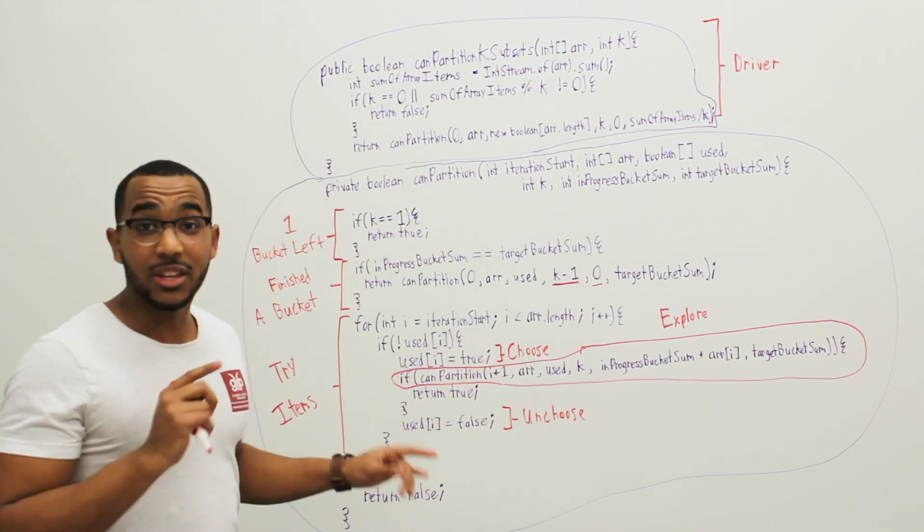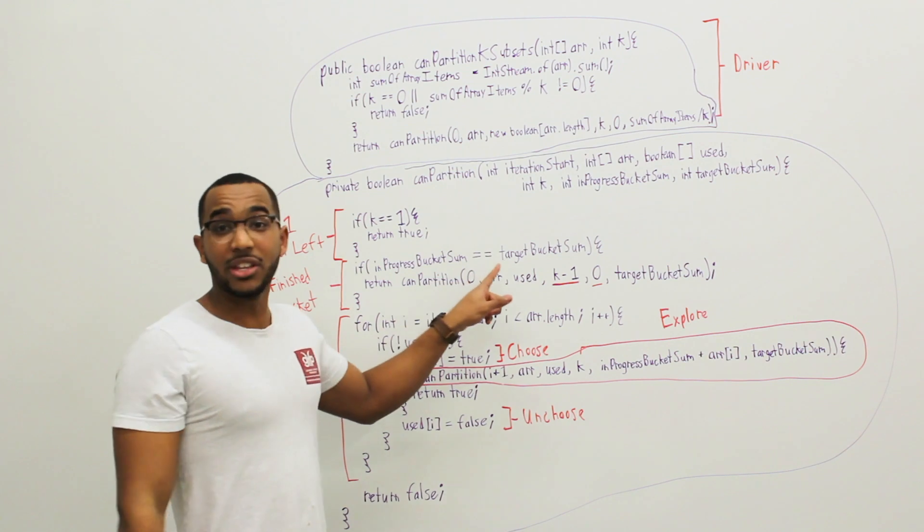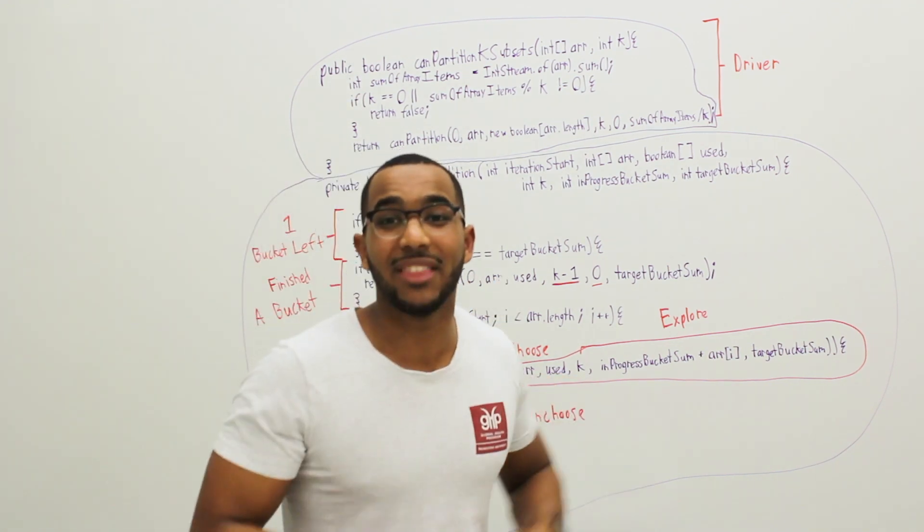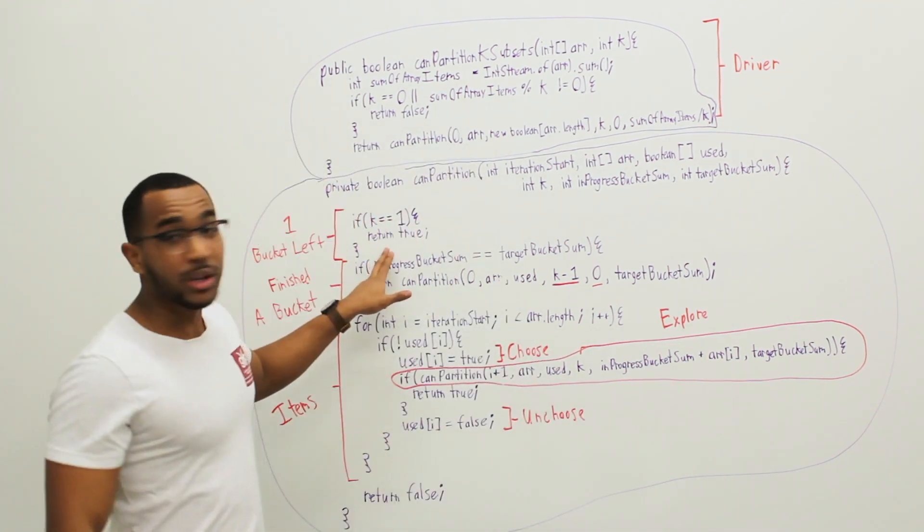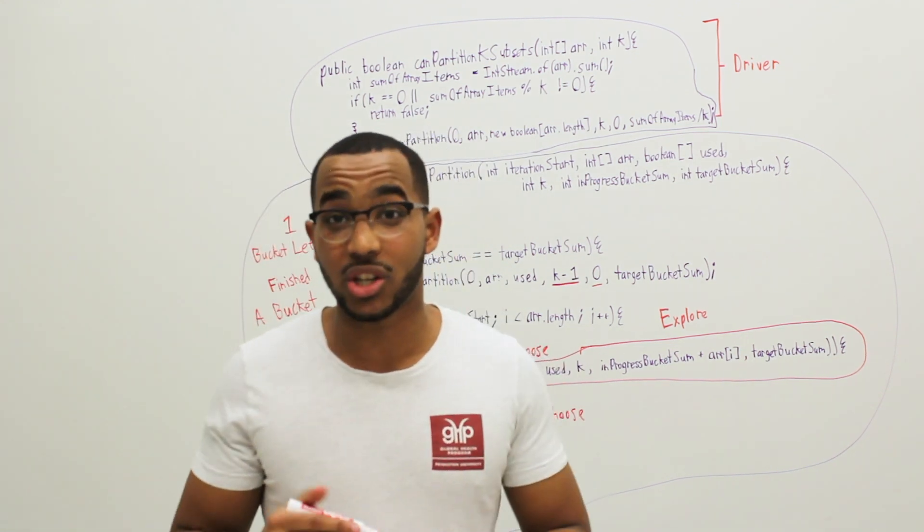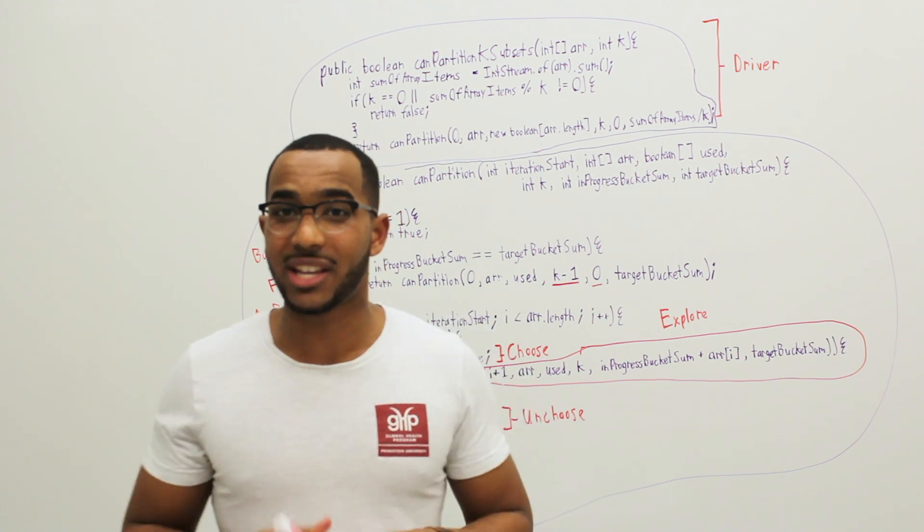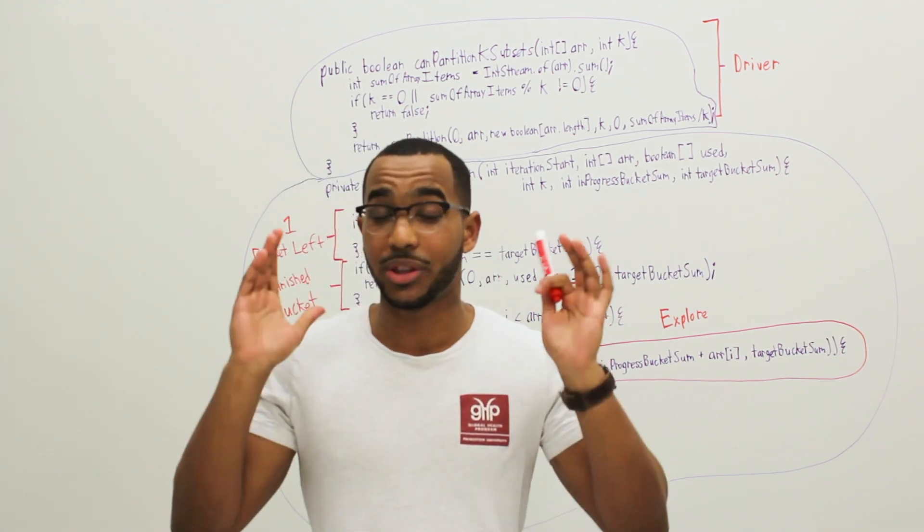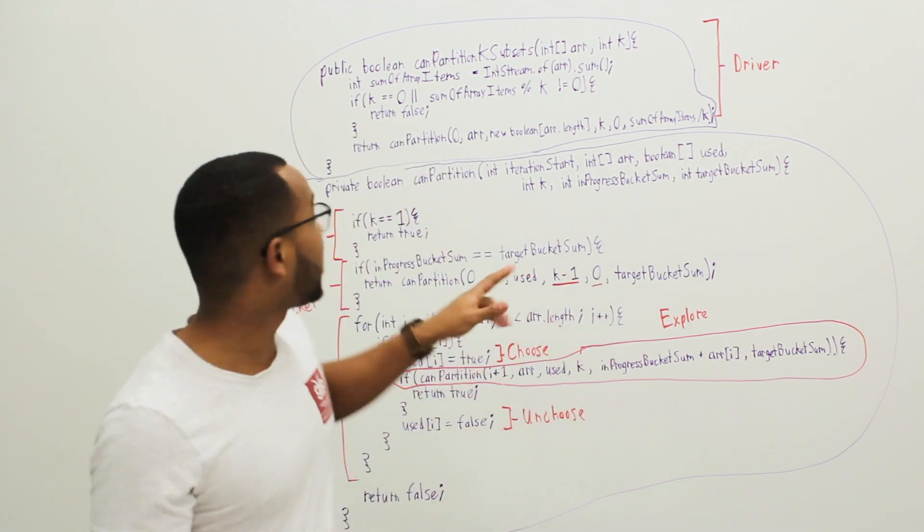And eventually, the bucket sum is going to equal the target bucket sum. And at that point, we work on the next bucket and then the next one. And then we're going to reach one bucket. And at that point, we know we can partition into k equals some buckets. That is our answer. That is what the question asks of us. And then we can return true.